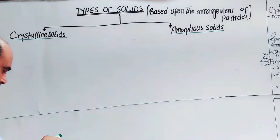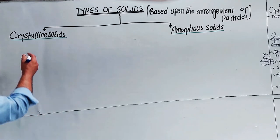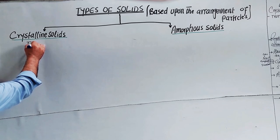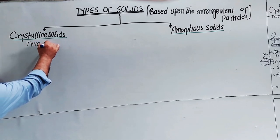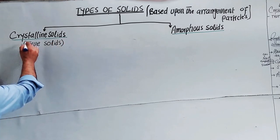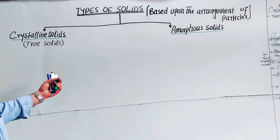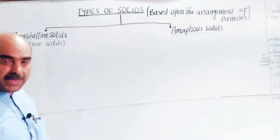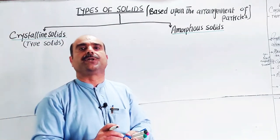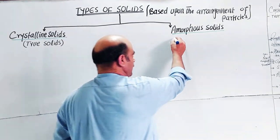Crystalline solids are also called true solids. These are the true solids, and they have characteristic properties that distinguish them from other solids.